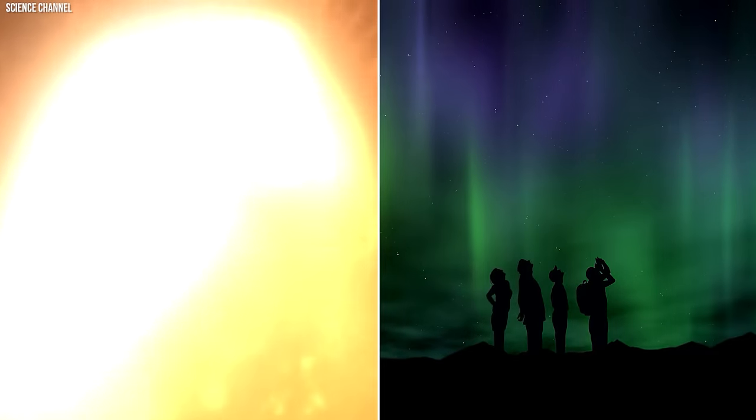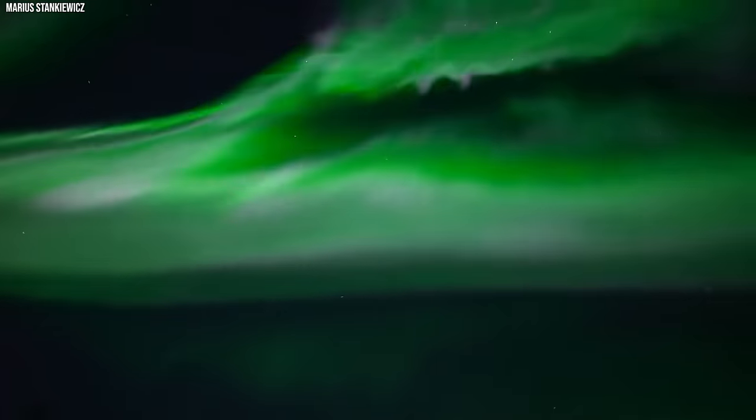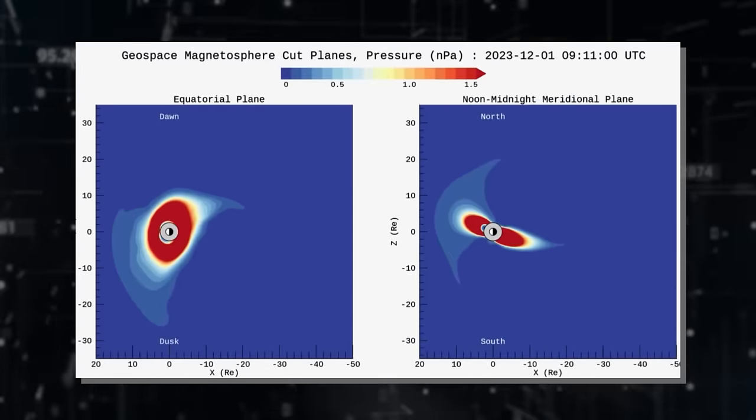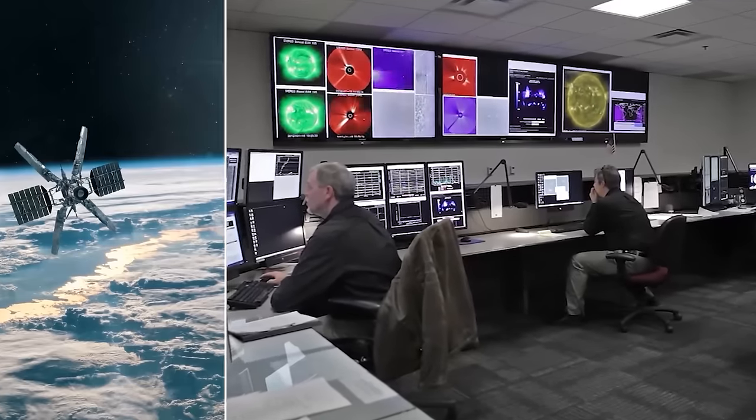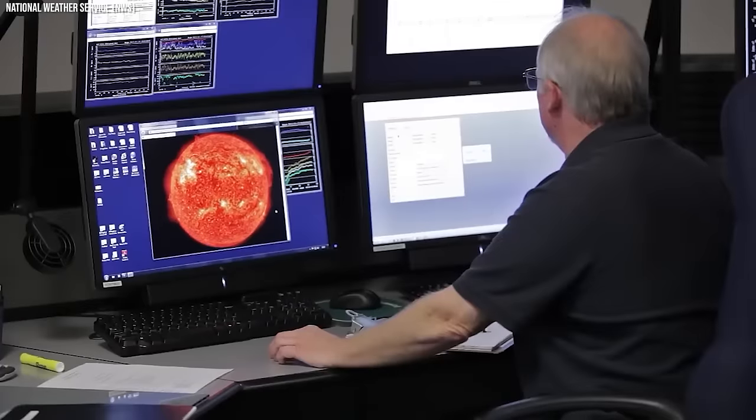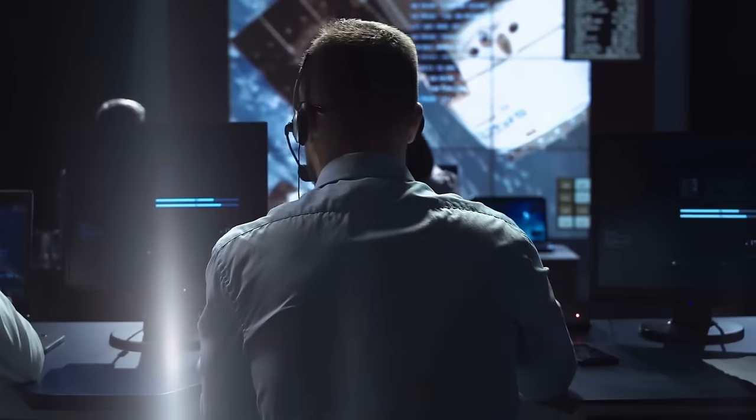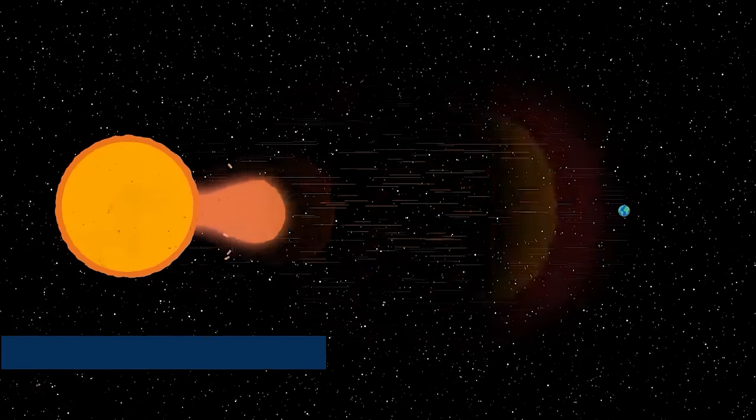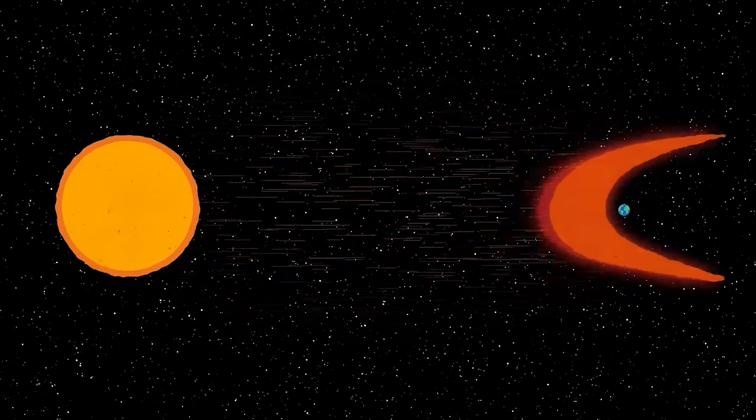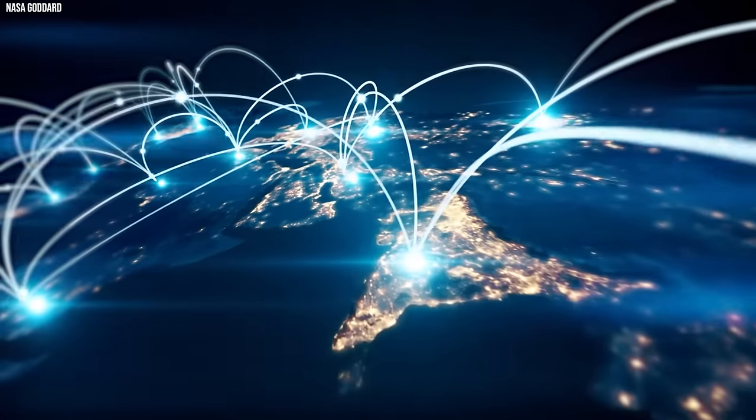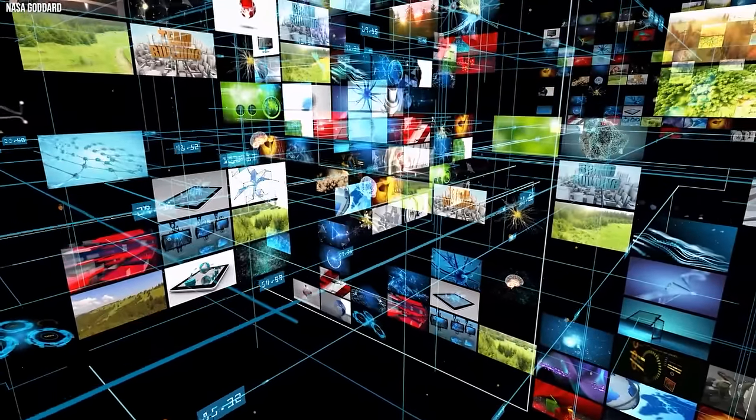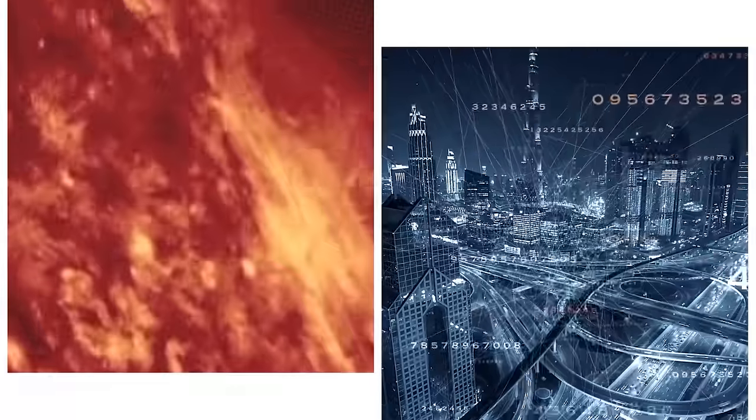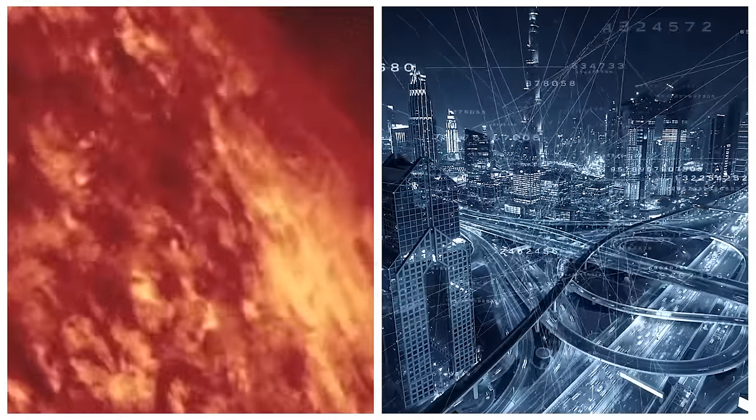However, while this particular solar storm treated skygazers to a stunning visual treat, larger solar storms can wield destructive power. According to the Space Weather Prediction Center, G3 storms, more severe solar disturbances, have the potential to cause problems in radio and satellite navigation systems. These storms can disrupt low-frequency radio signals and intermittently affect satellite navigation, causing disturbances in communication systems. The ramifications of a colossal G3 storm could be even more severe, with predictions indicating the possibility of a global internet outage. Such an event could significantly impact our interconnected digital world, underscoring the vulnerability of our technological infrastructure to solar disturbances.